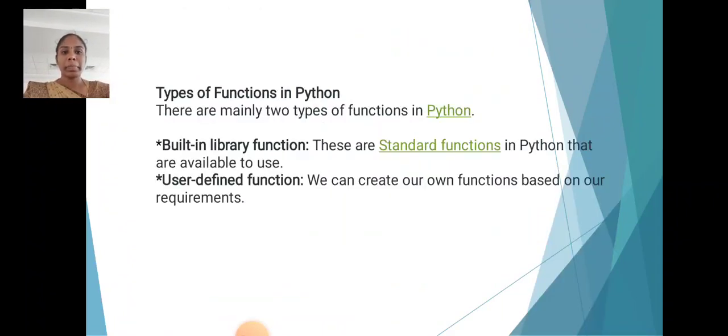Types of functions in Python. There are two types in Python. First one is built-in library function. Second, user-defined function. Built-in library functions are standard functions in Python that are available to use. User-defined functions: we can create our own functions based on our requirements.